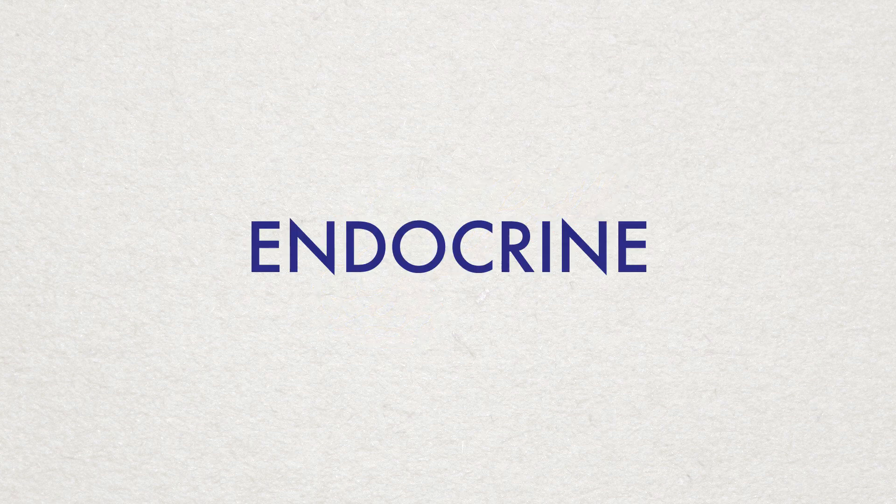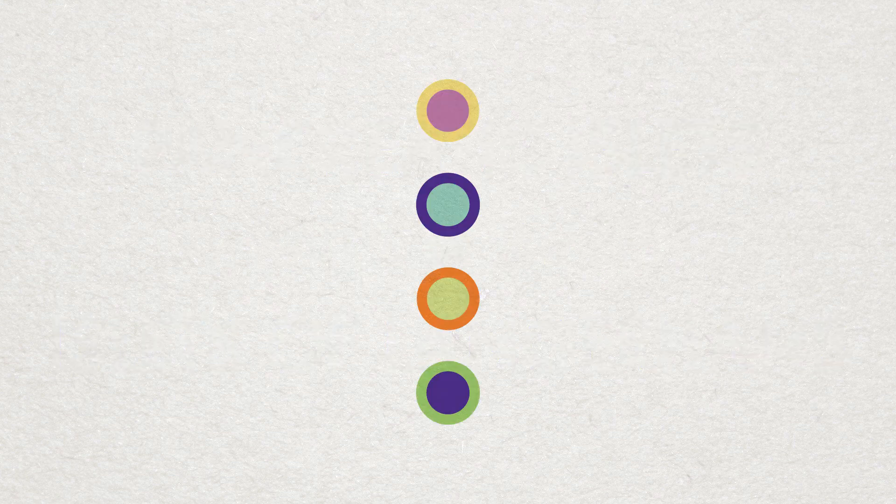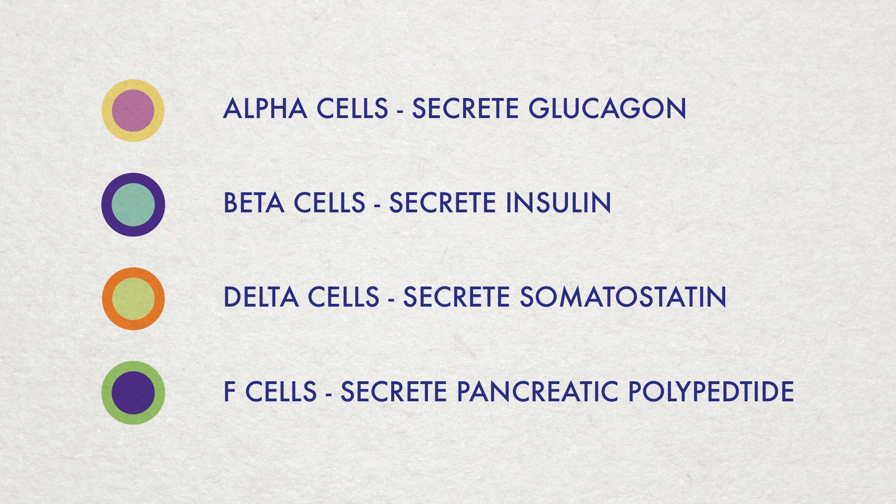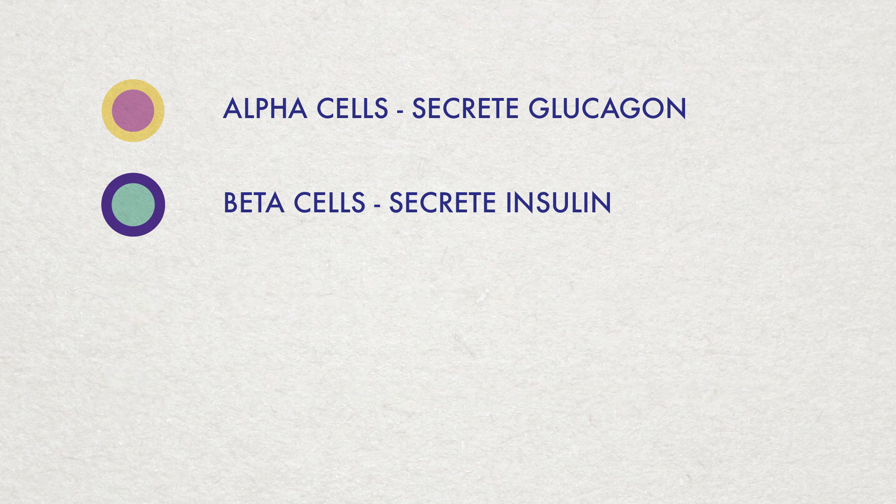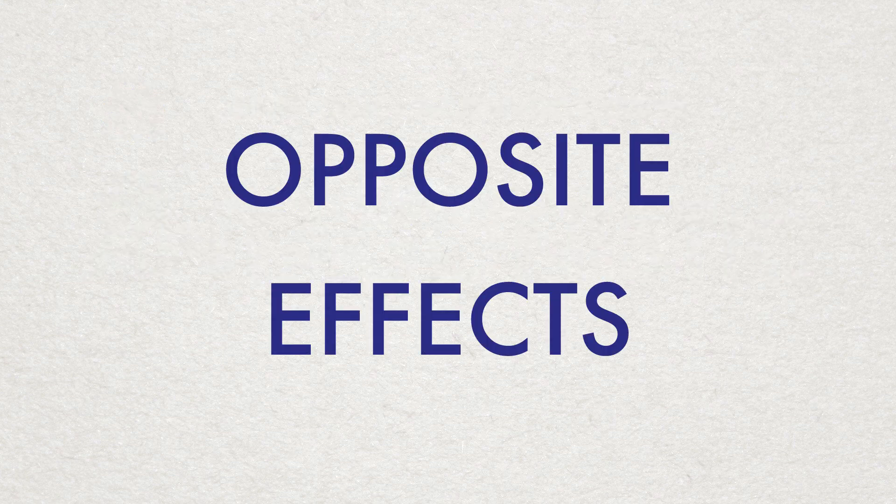Within the pancreas, there is endocrine tissue called pancreatic islets or the islets of Langerhans. Each pancreatic islet includes four types of hormone-secreting cells. We are going to focus on alpha and beta cells. These hormones are antagonistic as their actions have opposite effects on the body.